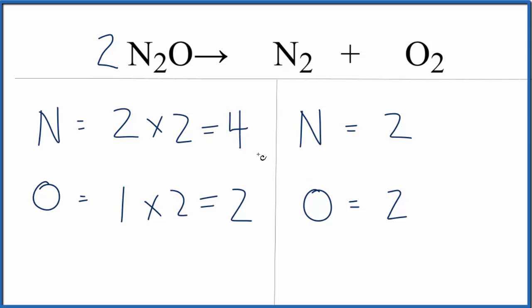Now the nitrogens aren't balanced, but to fix it we put a coefficient of 2 in front of the N2. Two times two equals four.